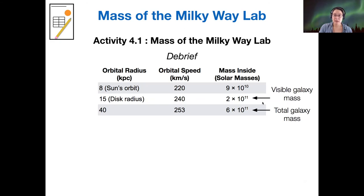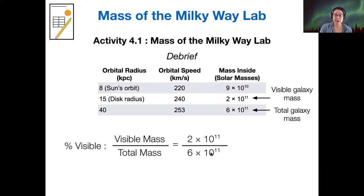And this 2 times 10 to the 11 solar masses represents the mass of the visible part of the galaxy, of the disk. And so therefore, if we want to know what percentage of the galaxy is made of visible material, we would take the visible mass divided by the total mass. And when we carry out that calculation, we get a fraction of one third. So then the rest of that must be dark matter. So two thirds of the galaxy's mass by this calculation is dark matter.